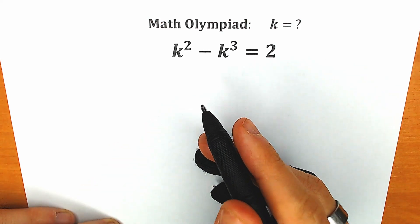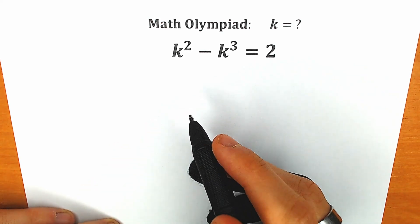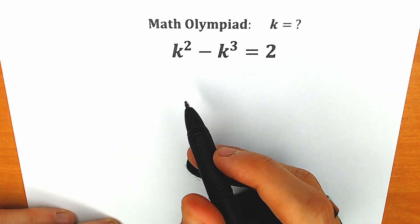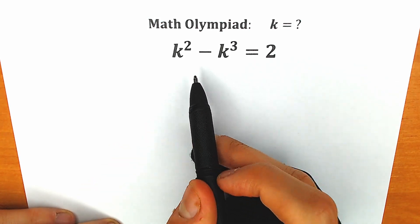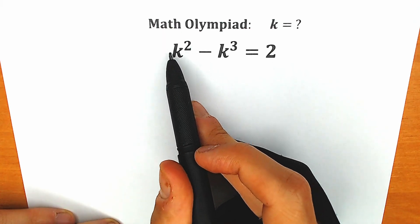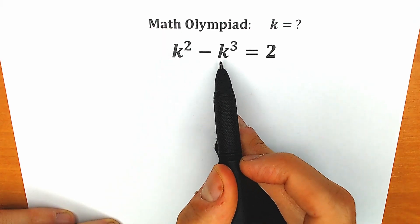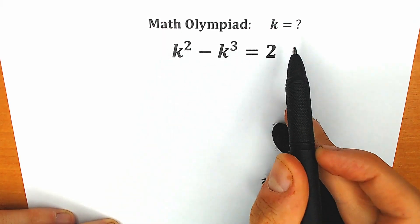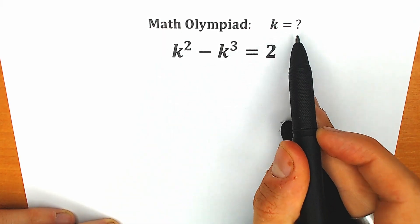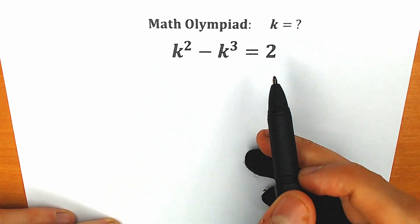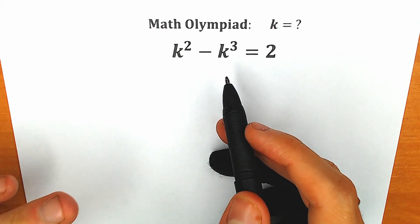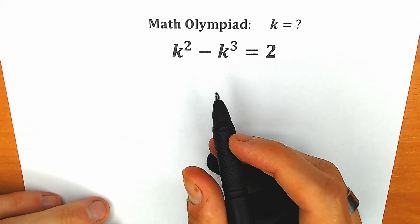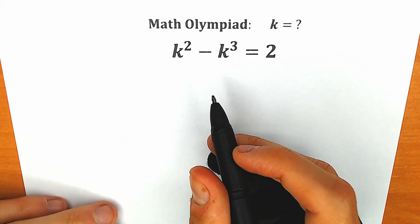Hello everyone! Happy to see you here! Welcome back to my channel Higher Mathematics! Today we have a very interesting equation. We have k squared minus k cubed equal to 2, and we need to solve this equation for k. If you have your answer, your solution, your assumption, you can write it in the comments below, and then we will check the answers.